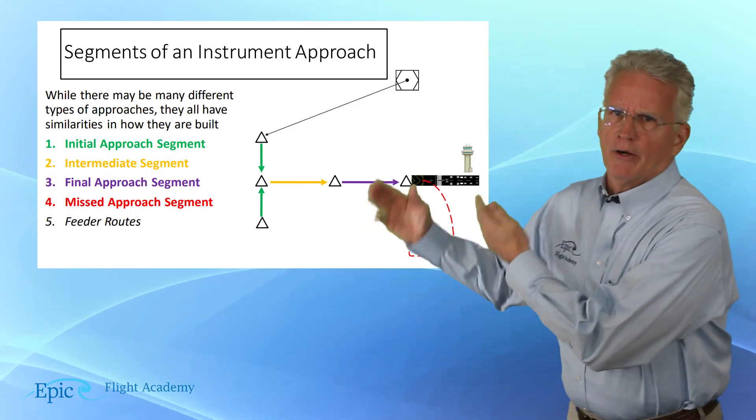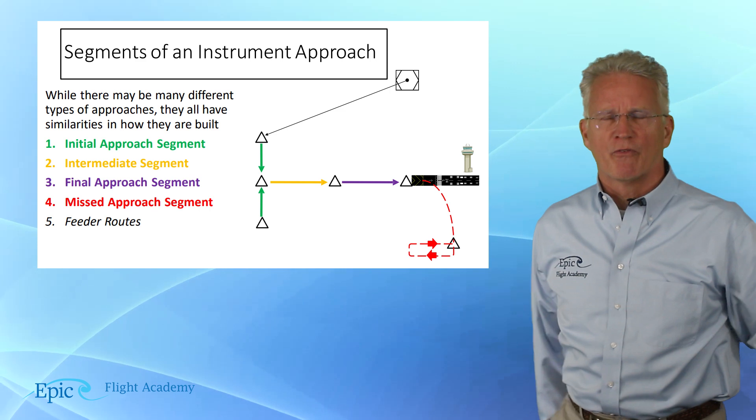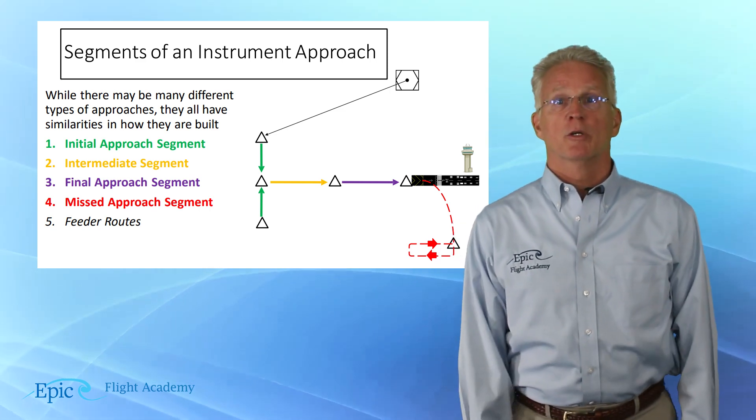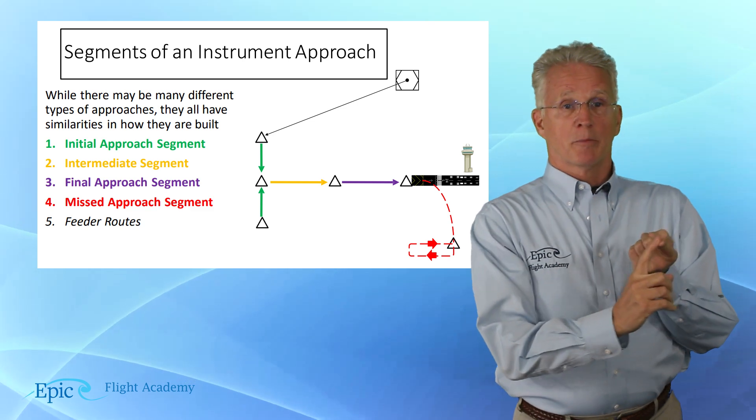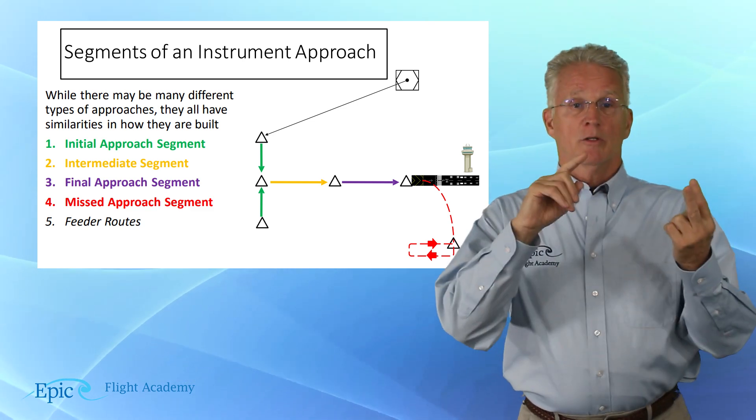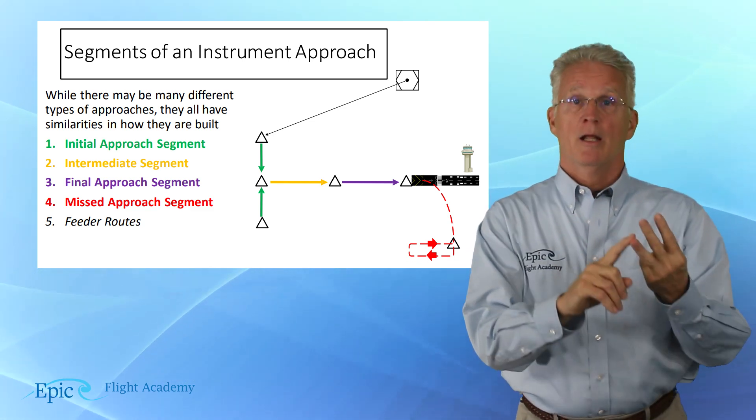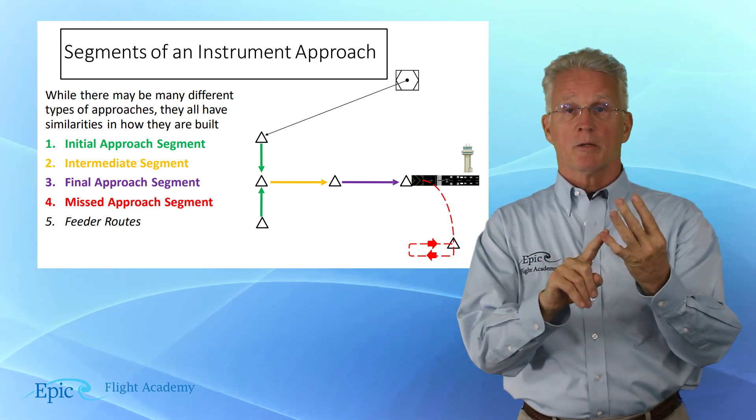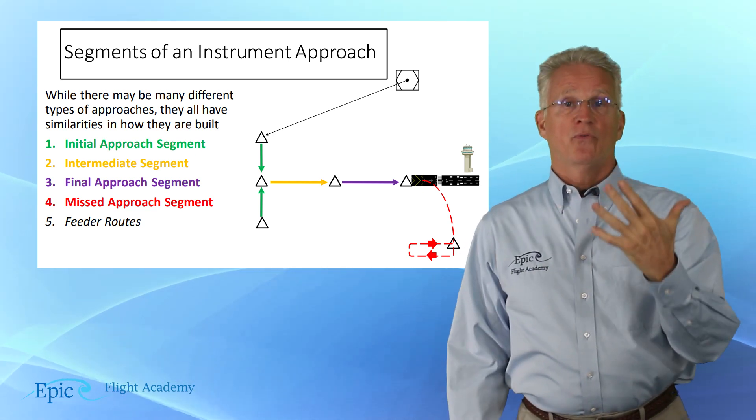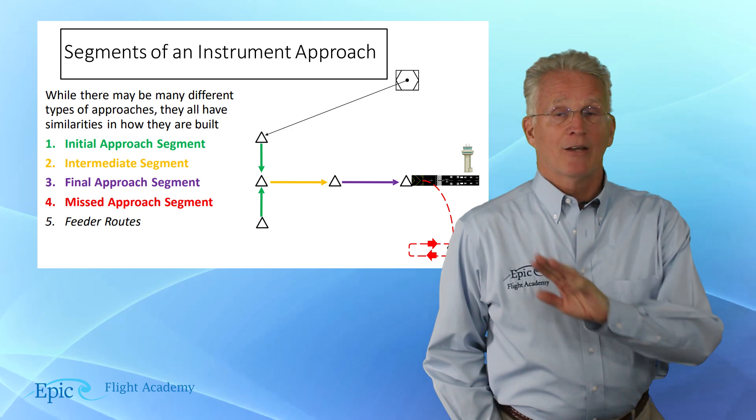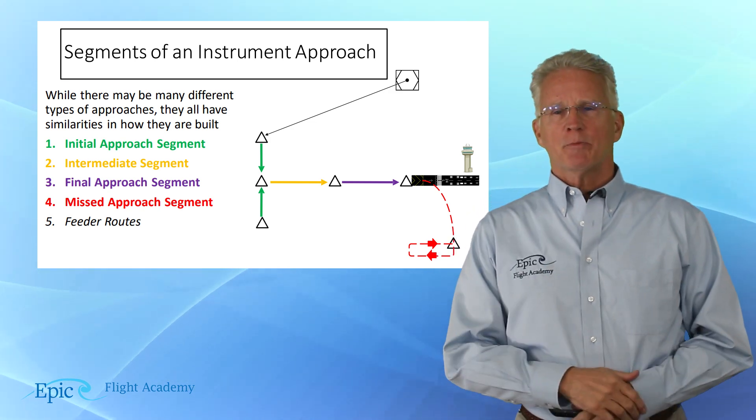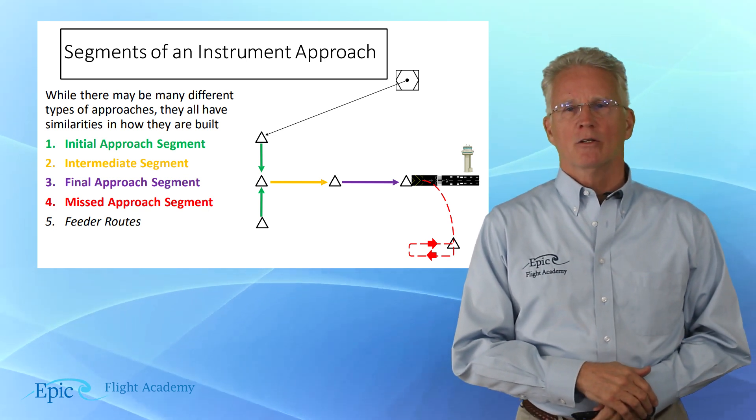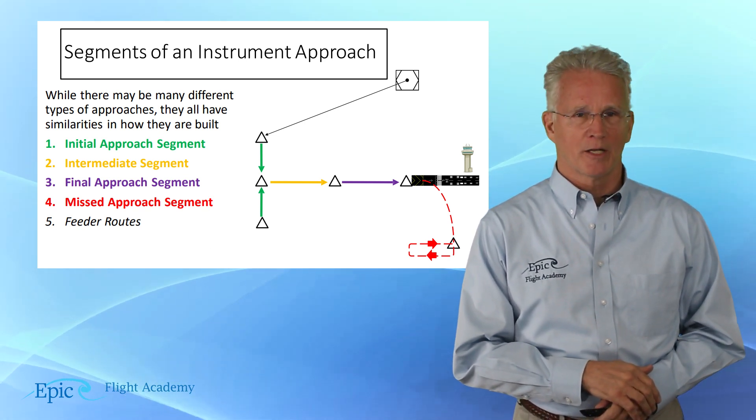So take a look here at our first slide. What are those five segments of an instrument approach? You can see them listed here: the initial approach segment, the intermediate segment, the final approach segment, then we have the missed approach segment, and feeder routes. Now remember, not all approaches have all five segments. Let's break this down and take a look at these different segments.